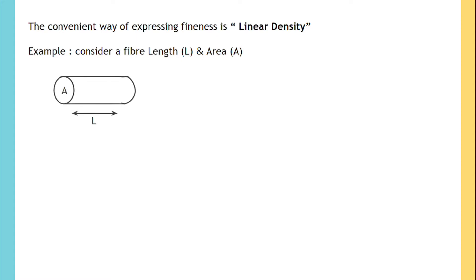We know that volume is area into length, and mass is volume into density. Substituting area into length in the volume, the formula becomes mass equals to area into length into density.